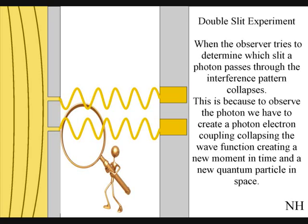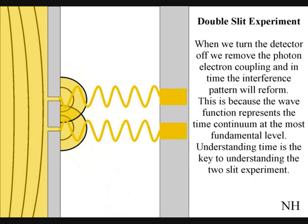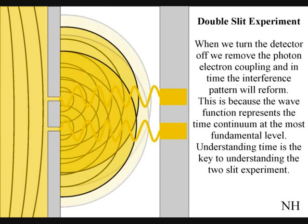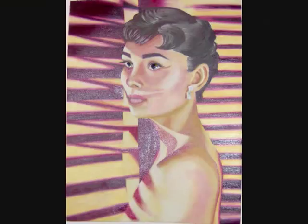If we turn the detector off, we remove the photon-electron coupling, and in time the interference pattern will reform. Just like in Newton's first law of motion, the interference pattern will continue to maintain its state unless acted upon by an external force.